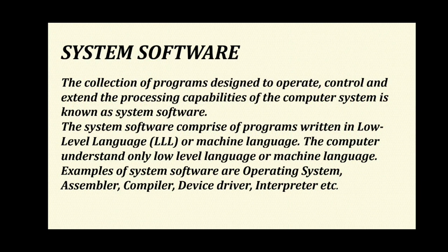System software: the collection of programs designed to operate, control, and extend the processing capabilities of the computer system is known as system software. System software comprises programs written in low-level language, or machine language, which is the only language the computer understands. Examples of system software are operating system, assembler, compiler, device driver, and interpreter.